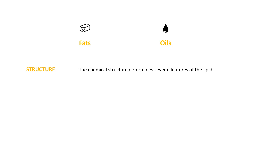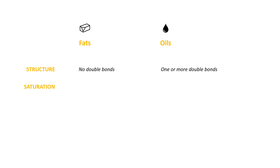If there are some double bonds, then that triglyceride is an oil. So very simply, this is the key distinction between a fat and an oil — they're both triglycerides. It depends on whether there are any double bonds in the hydrocarbon chain attached to the glycerol backbone. If there are no double bonds, all of the carbon atoms are taken up with as many hydrogens as it's chemically possible to have — it's a fat. An oil may have one or more double bonds. This leads us to our next concept: saturation.